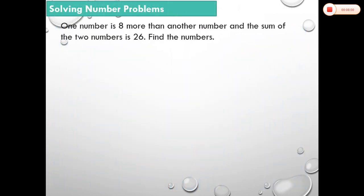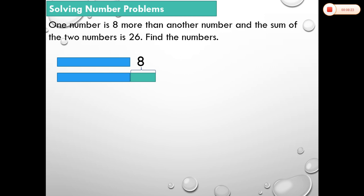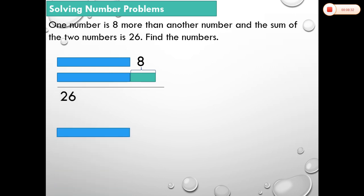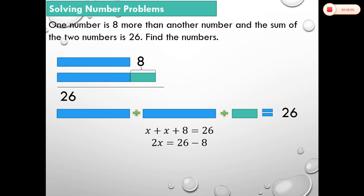Let's try to solve number problems. One number is 8 more than another number and the sum of the two numbers is 26. Find the numbers. Let's represent the blue rectangle as one number. The second number will be 8 more, so the green rectangle is 8 units long. The sum of the two numbers is 26, so x + (x + 8) = 26. Solving: 2x = 18, so x = 9. Hence the two numbers are 9 and 17.